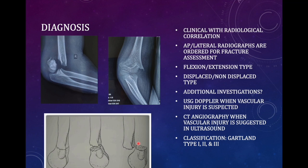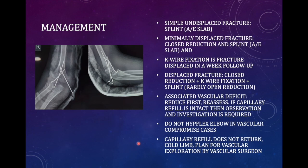Vascular injury usually needs open exploration and repair. Whenever the artery is obliterated, prophylactic fasciotomy is needed — you must decompress the compartment. Vessel injury leads to toxin collection in the forearm compartment, causing edema, tightness of the compartment, and ultimately compartment syndrome. The procedure for compartment syndrome is fasciotomy.